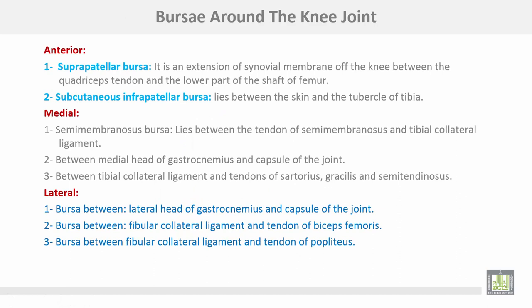Bursae around the knee joint: anteriorly there is the suprapatellar bursa, which is an extension of the synovial membrane of the knee between the quadriceps tendon and the lower part of the shaft of the femur. The subcutaneous infrapatellar bursa lies between the skin and the tubercle of the tibia. Medially, the semimembranosus bursa lies between the tendon of the semimembranosus and the tibial collateral ligament. Another bursa lies between the medial head of gastrocnemius and the capsule of the joint.